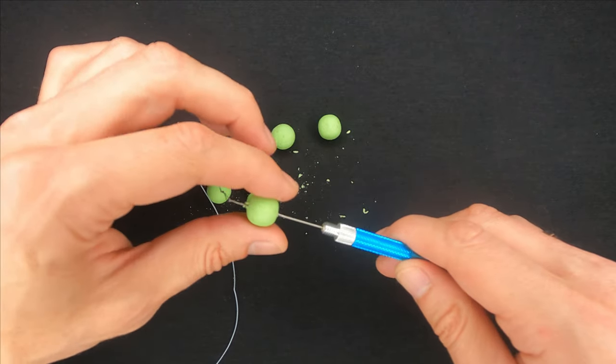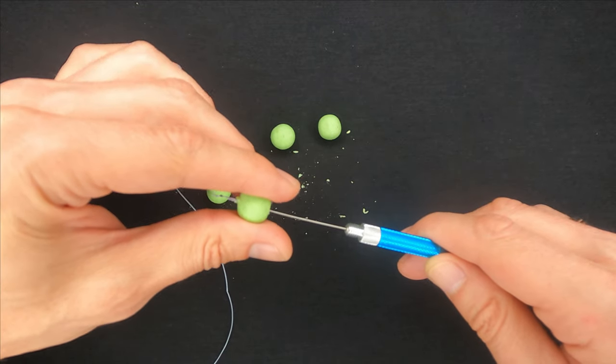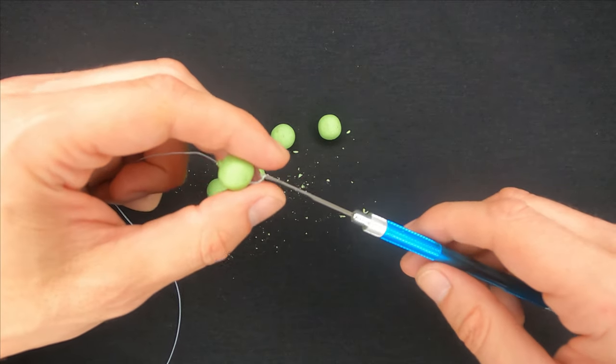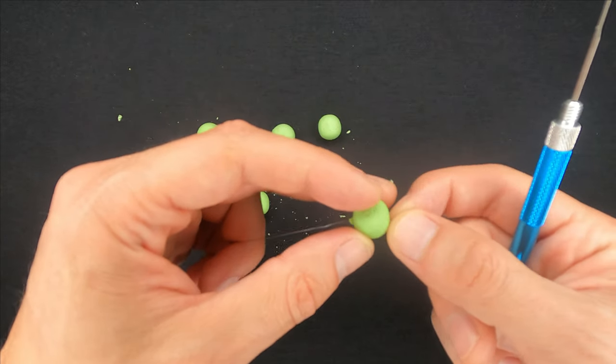Basically, that's all what this tool does. It helps you to make a hole in a boilie quite easily and fast and put a line through the hole you've just done.